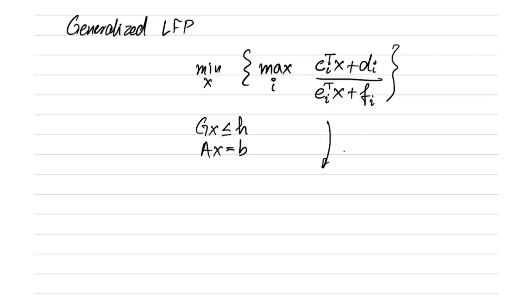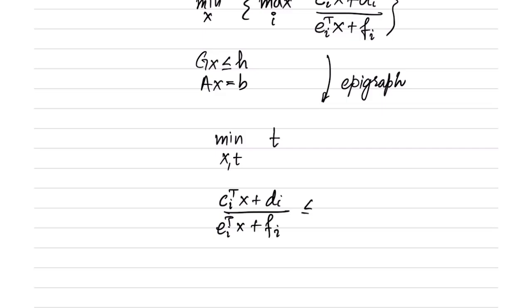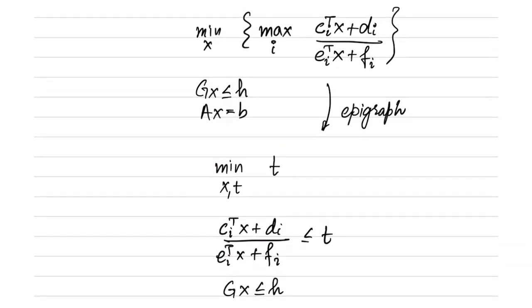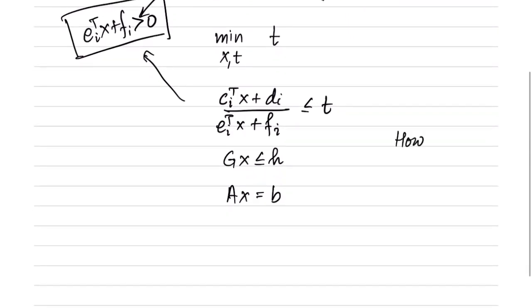If we apply the epigraph trick, we obtain: minimize over x and t, with the constraint that the maximum over i of (ci^T x + di) / (ei^T x + fi) is less than or equal to t. The other constraints remain the same: gx ≤ h and Ax = b. Remember that both formulations have the implicit constraint that ei^T x + fi > 0.